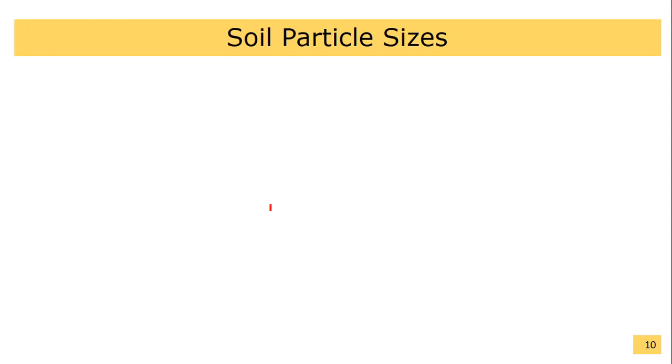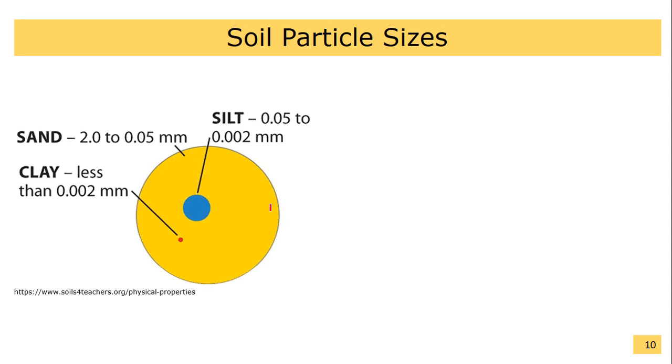Soil Particle Sizes. Soil consists of sand, silt, and clay particles. Sand particles are the largest and range in diameter from 2 to 0.05 mm.